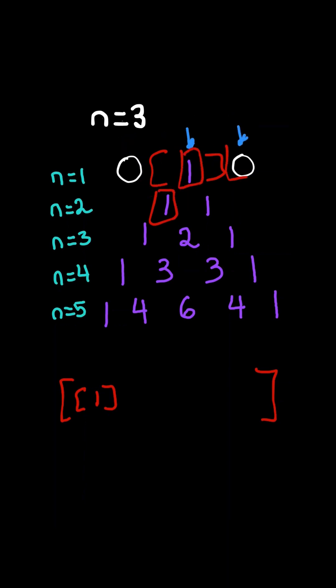Again, we sum the values of our pointers to produce the new element, and thus we have successfully created the new row.